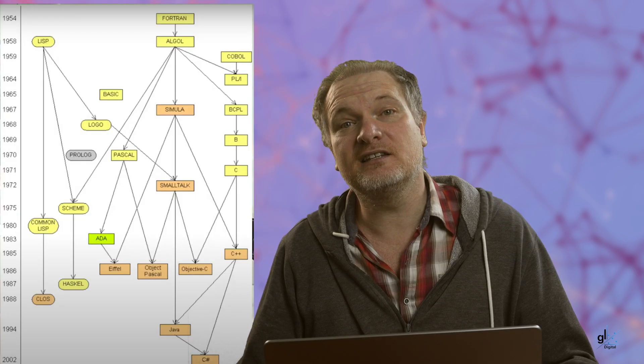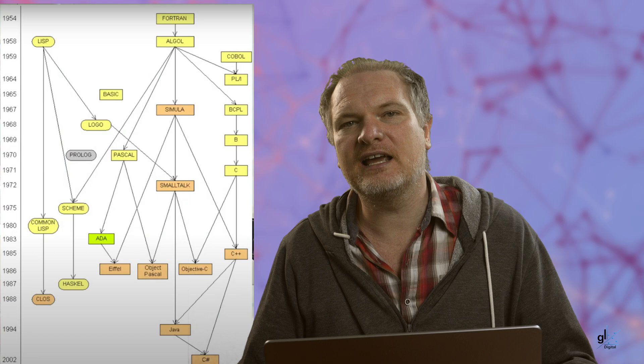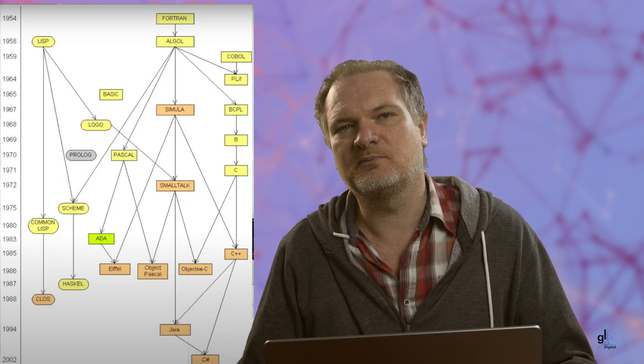In many interviews, Stroustrup alludes to a programming language called Simula that had a profound influence on C++. Simula was developed in the 1960s as an extension of Algol 60. Simula 67 introduced objects, classes, inheritance, and subclasses. If you look at the evolution diagram, you can clearly see the lineage of C++ and how languages like C# and Java are descendants of it.